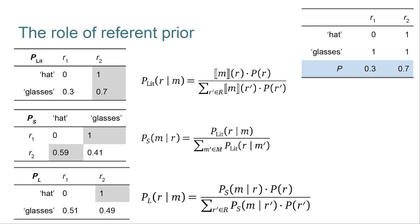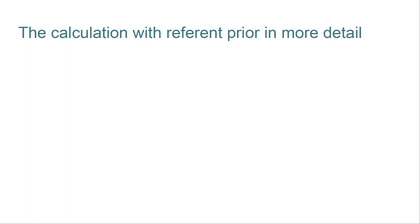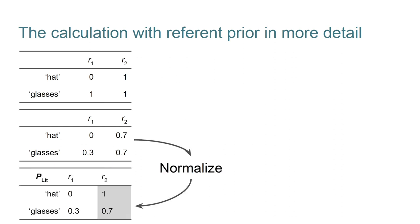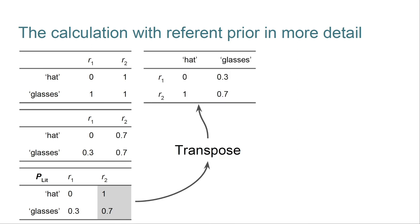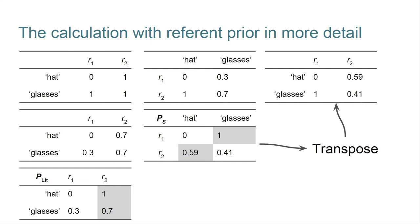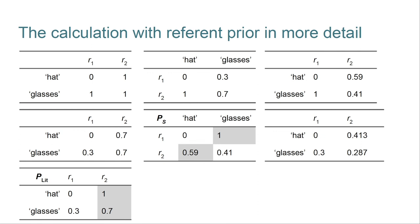We also bring in the prior in the pragmatic listener calculation. And notice that instead of having just 0.7 prior probability of choosing r1 given hat, it's now down to around 50%. That's as we predicted given the strong bias in favor of referring to r2. Just to round this out, let's go through the whole calculation. So we start with the semantics. We incorporate the priors, that's the new piece. Then we normalize as usual. Then we transpose and normalize for the speaker calculation. Then we transpose to begin the pragmatic listener calculation. Then we bring in the priors again. And then finally normalize. And now you have the final pragmatic speaker. And as I said, the bias away from r1 has weakened the pragmatic association between glasses and r1.